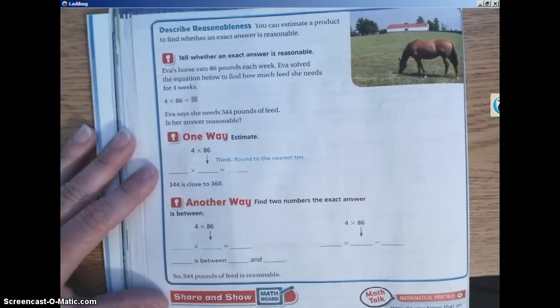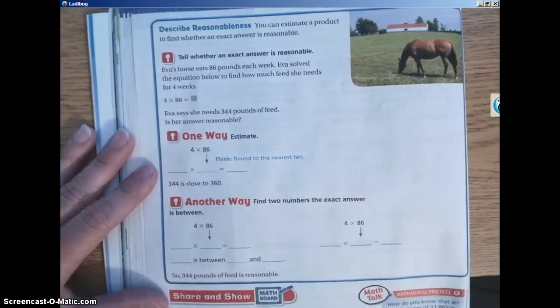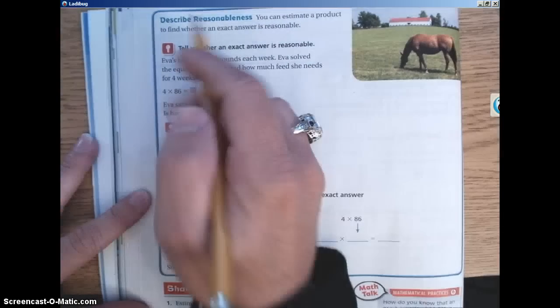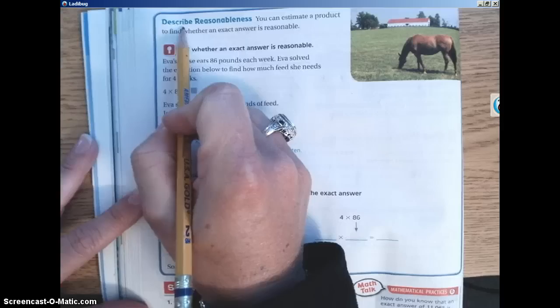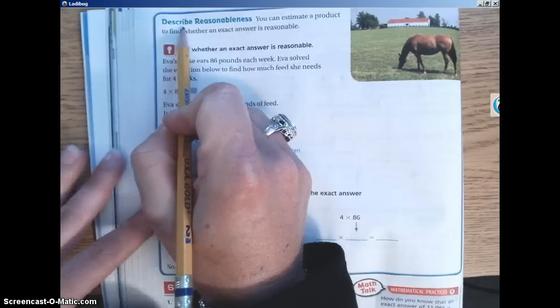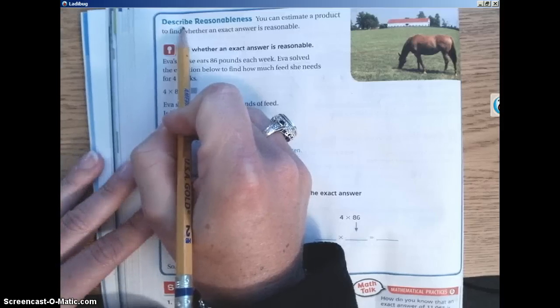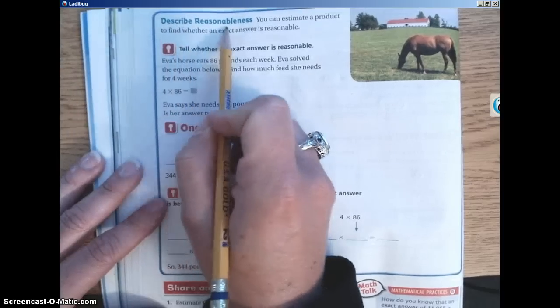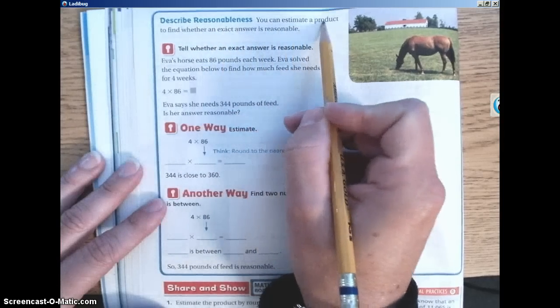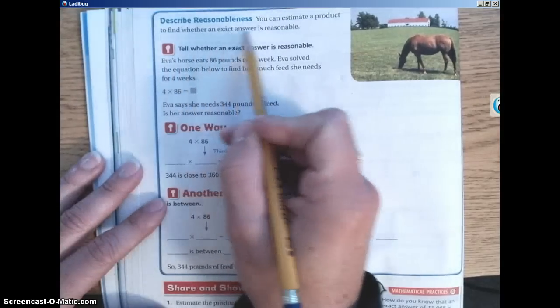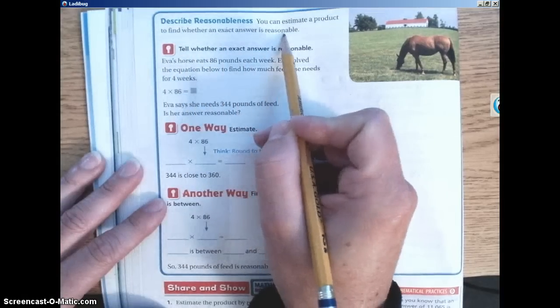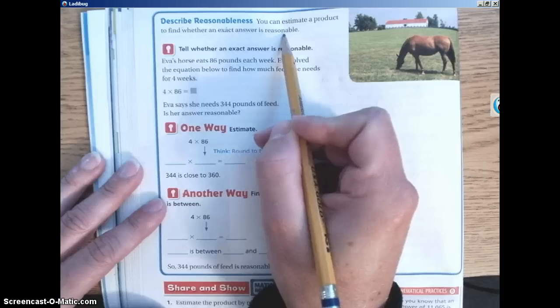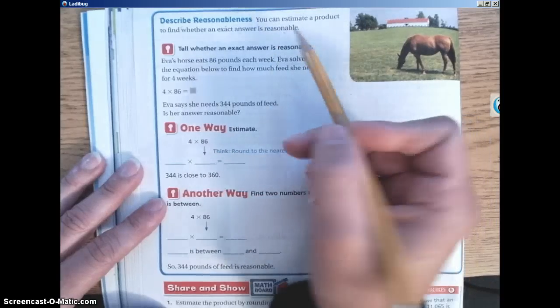Now turn to page 82 in your book. We're moving on to the next part of Unlock the Problem. If you look at the top here, follow along with me. Part of estimation is describing reasonableness. So basically what we estimate is going to help us determine whether or not the actual answer is going to be reasonable. So describe reasonableness, it says you can estimate a product to find whether an exact answer is reasonable. So if our exact answer is close to our estimate, then we can say that the exact answer is a reasonable answer. Meaning it logically makes sense.